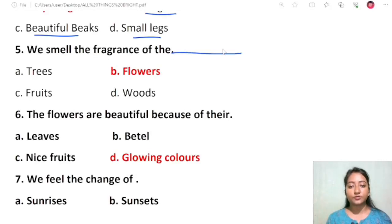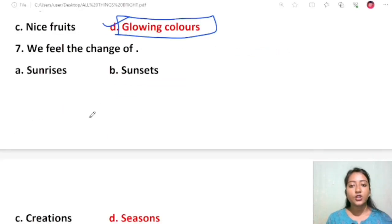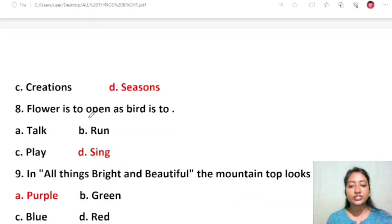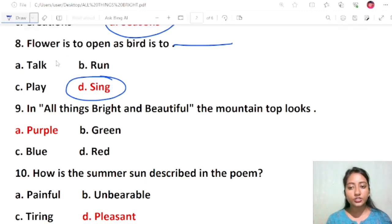Question 5: We smell the fragrance of the flowers. The flowers are beautiful because of their glowing colors. Options were leaves, pollen, fruits, and glowing colors. Question 6: We feel the change of seasons. Options are sunrises, sunsets, creations, and seasons. The correct option is seasons. Question 7: Flower is to open as bird is to sing. The answer is they sing.